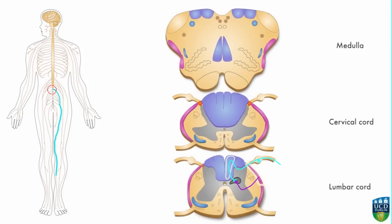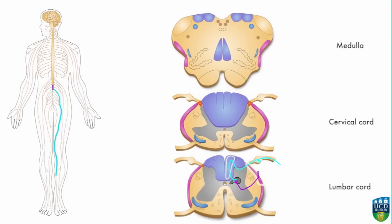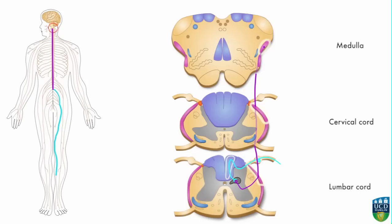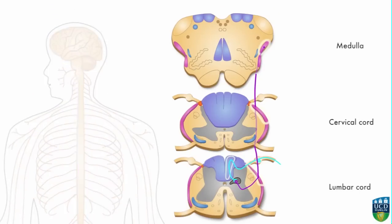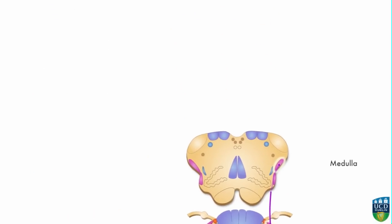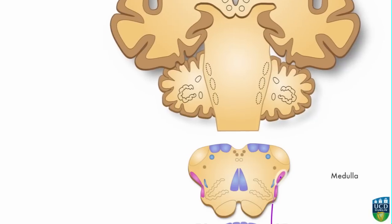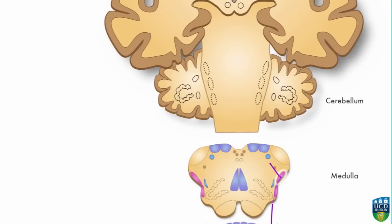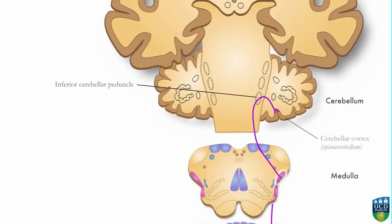The second order neuron continues to carry the impulse up towards the medulla via the dorsal spinocerebellar tract. From the medulla, the axon of the second order neuron enters the ipsilateral cerebellum through the inferior cerebellar peduncle and carries the impulse to an appropriate area of the cerebellar cortex.